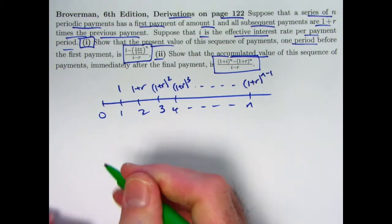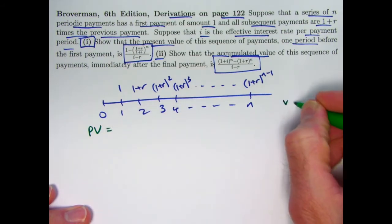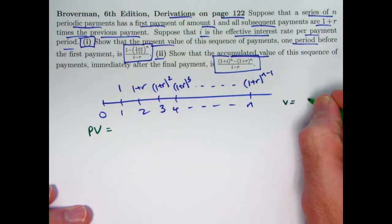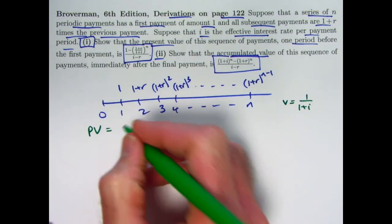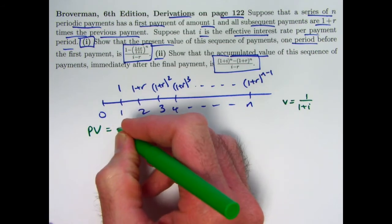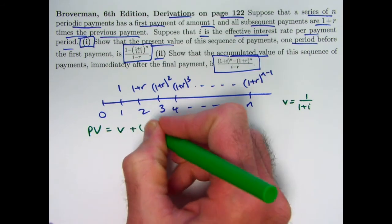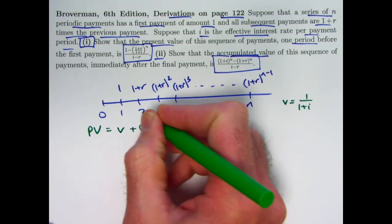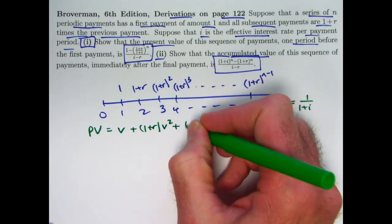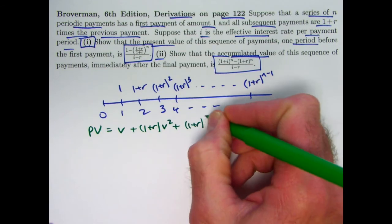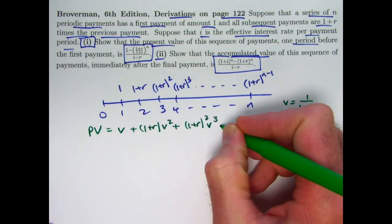What about the present values of those payments? We can use v, the present value discount factor — it's 1 over 1 plus i. The payment of 1 needs to go back in time by 1 year, so its present value is v. The second payment of 1 plus r needs to be pulled back 2 periods, so it gets multiplied by v squared. The third payment of (1 plus r) squared needs to be pulled back 3 periods, so it's (1 plus r) squared times v cubed.